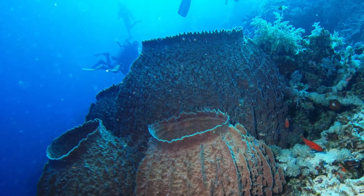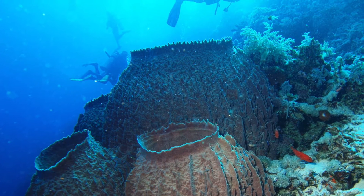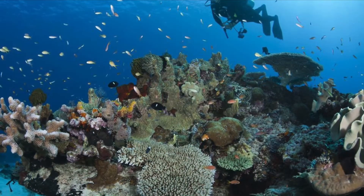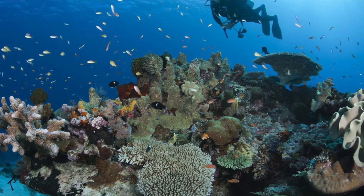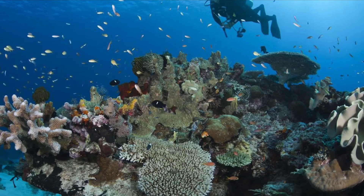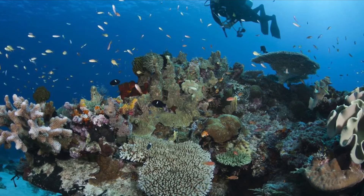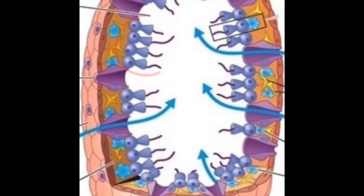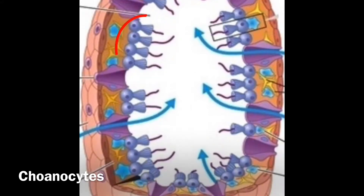They are surprisingly successful for the simplest animal on Earth and play a large role in aquatic ecosystems. Let's take a look at the anatomy of a sea sponge, shall we? The empty space within the sponge is called the spongocoel. There are flagellated cells which correspond to the spongocoel, called choanocytes.